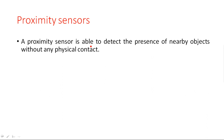A proximity sensor is able to detect the presence of nearby objects without any physical contact. This is the main point to remember — we are not touching the device; just when we go nearby, that device immediately detects and gives some indication.